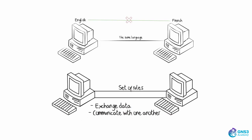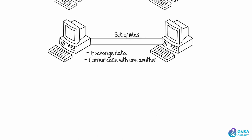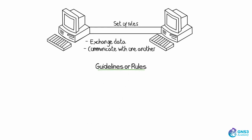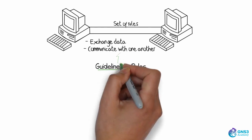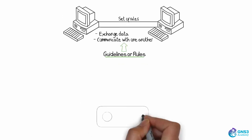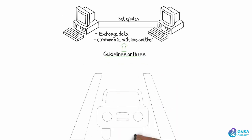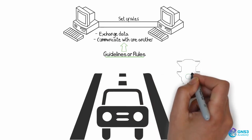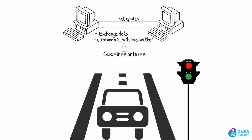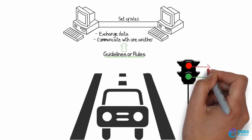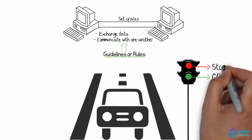In our everyday lives, we follow guidelines or rules when we communicate with one another. For example, when you drive on the road, you follow a set of rules. When a traffic light is green, it means go; when it's red, it means stop.